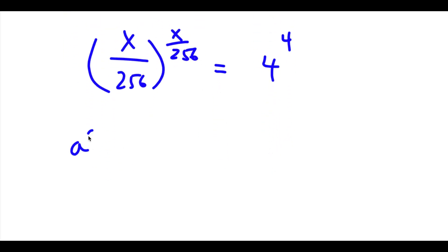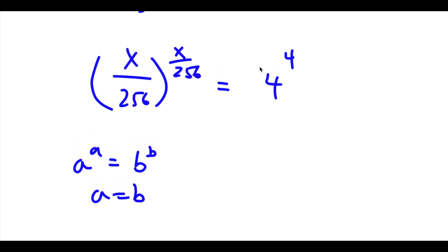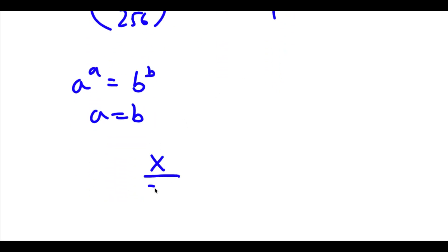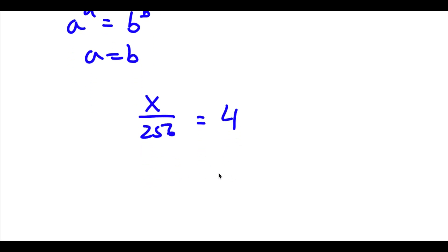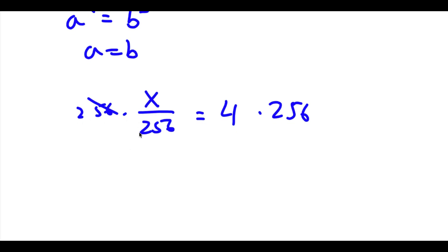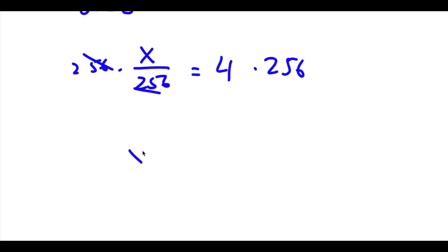Now if I have something in the form a to the power of a equals b to the power of b, this means a equals b. So in this case x over 256 equals 4. To solve this I simply multiply both sides by 256; these cancel out and I'm left with x equals 4 times 256, which is 1024.